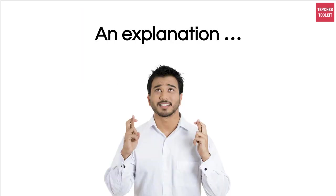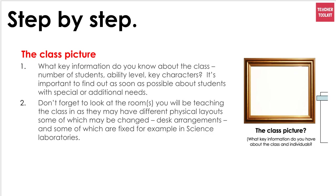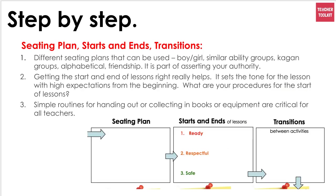Here's an explanation of the plan. Start in the top left box — the 'class picture' or 'big picture.' This is where you sum up the students from the last lesson. If you were explaining the class to a colleague: what key information would you share? What's the room like? Is it a fixed lab, outdoor classroom, or standard classroom? What are the needs — mixed ability, setted, different characteristics and data?